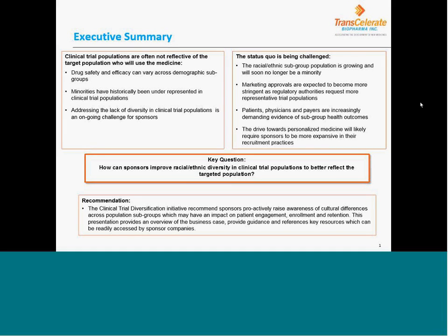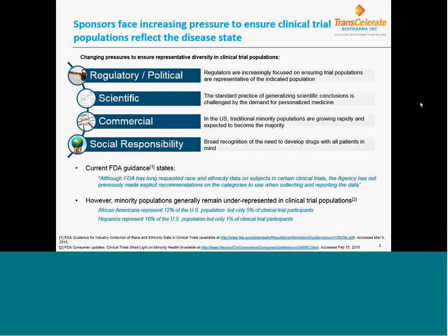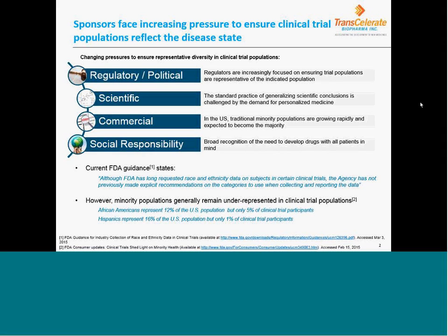This provides an overview of the business case, and references key resources which can be readily accessed by sponsor companies. There is increasing pressure to ensure clinical trial populations reflect the disease state, with changes and regulations significantly focused on ensuring trial populations are representative of the indicated population.